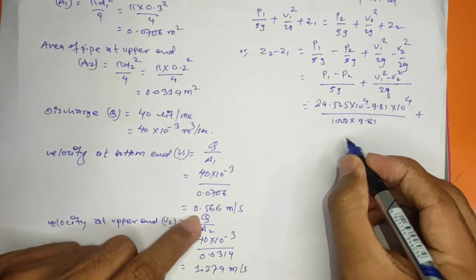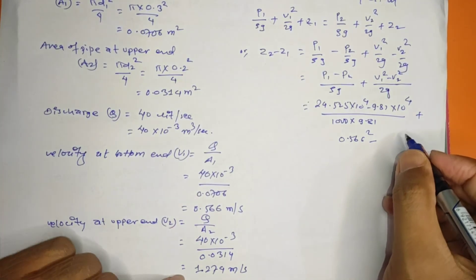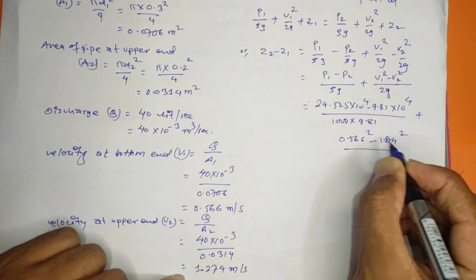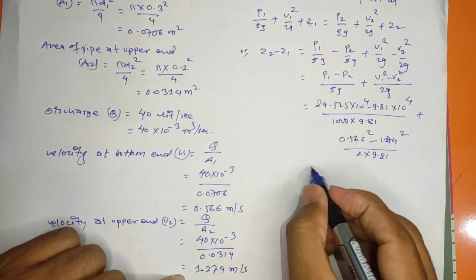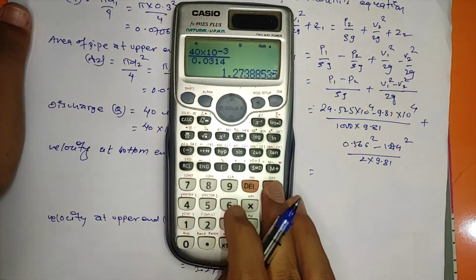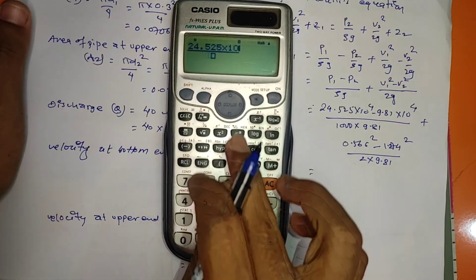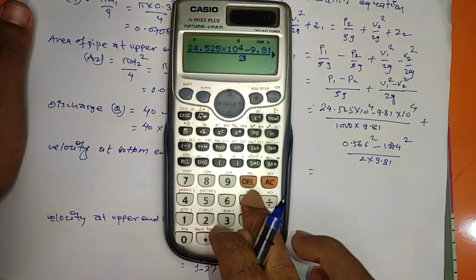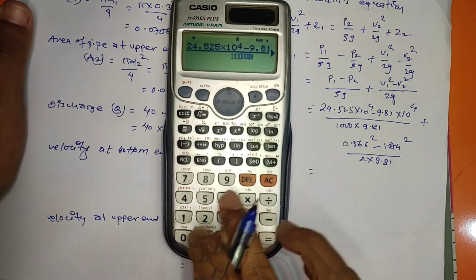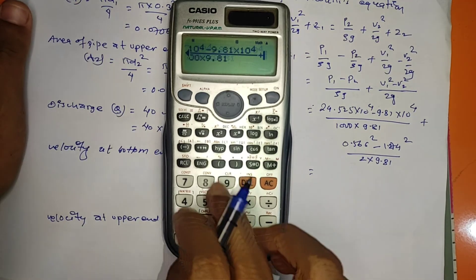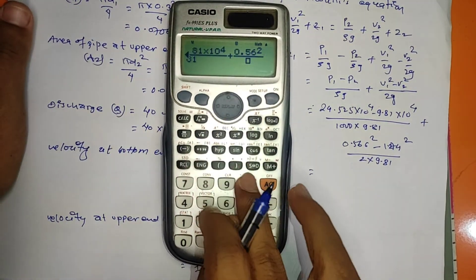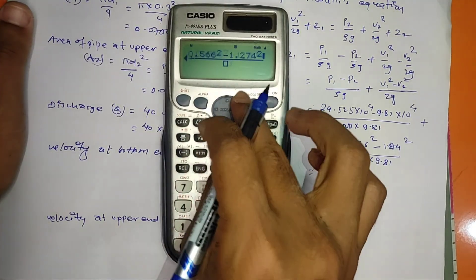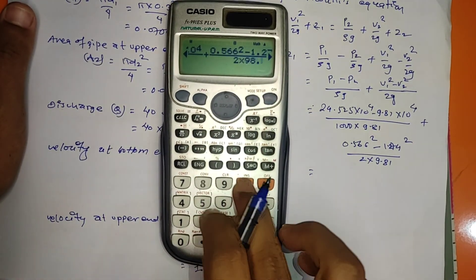Substituting values: Z2 minus Z1 equals (24.525 × 10⁴ minus 9.81 × 10⁴) divided by (1000 × 9.81) plus (0.566² minus 1.274²) divided by (2 × 9.81).